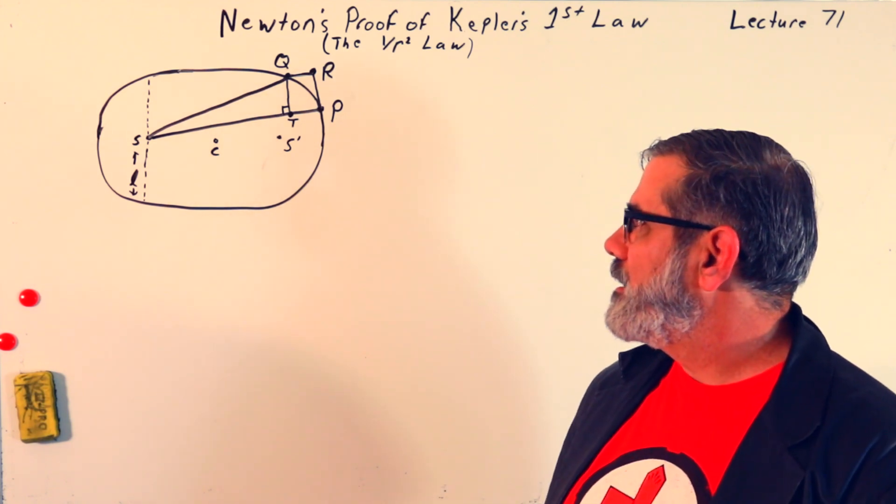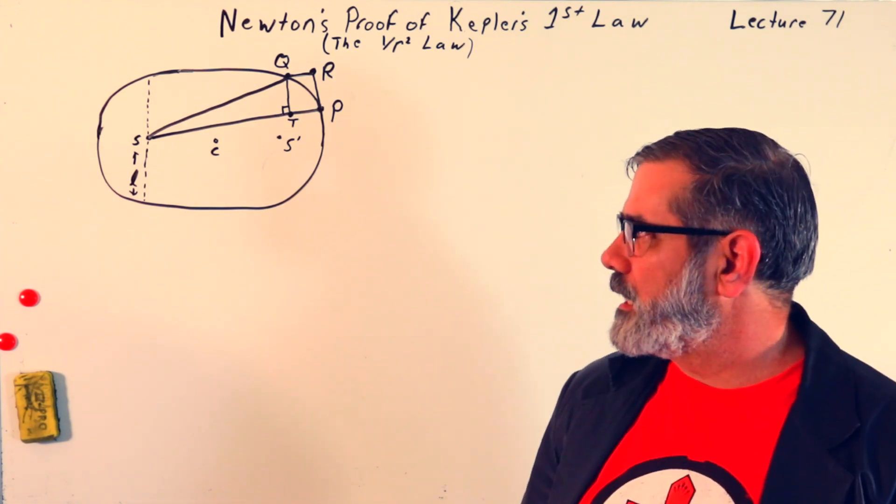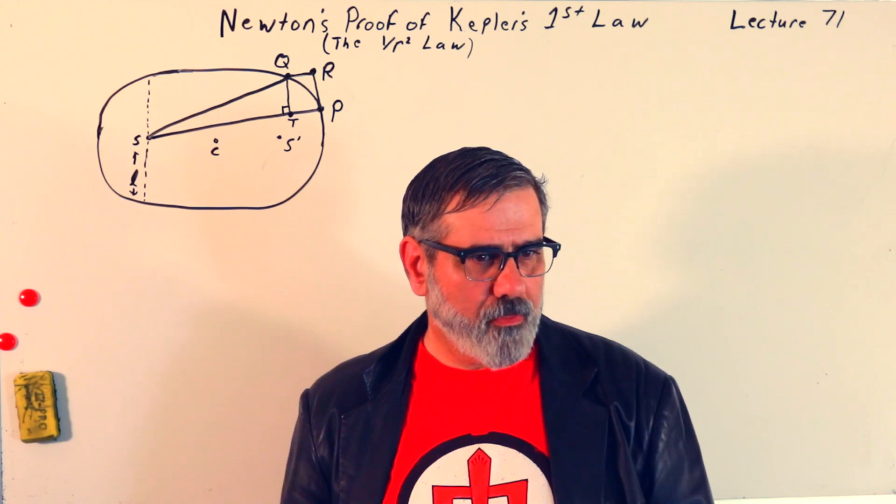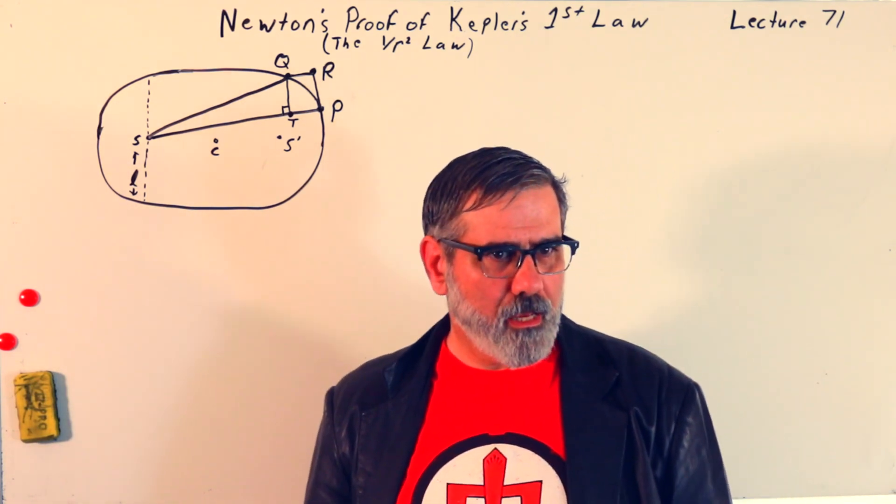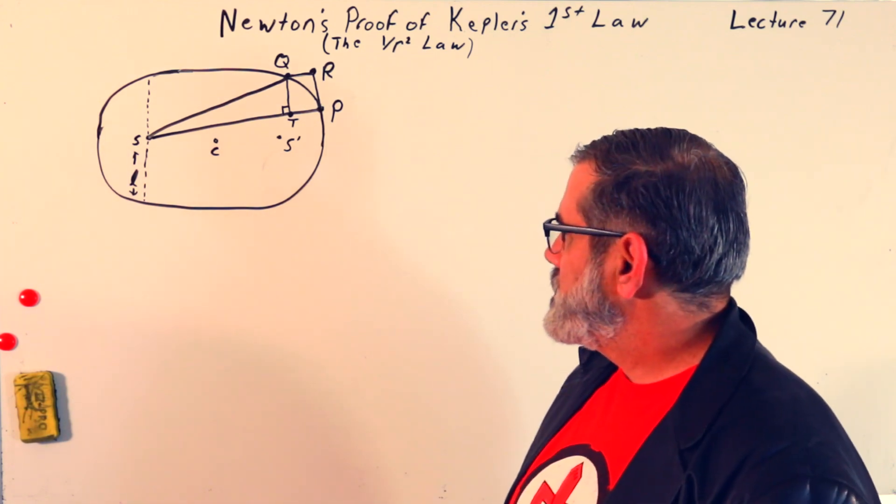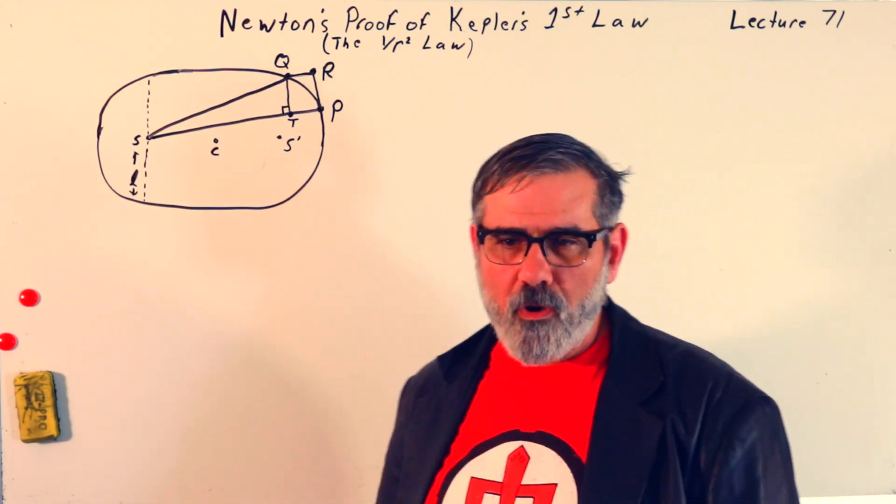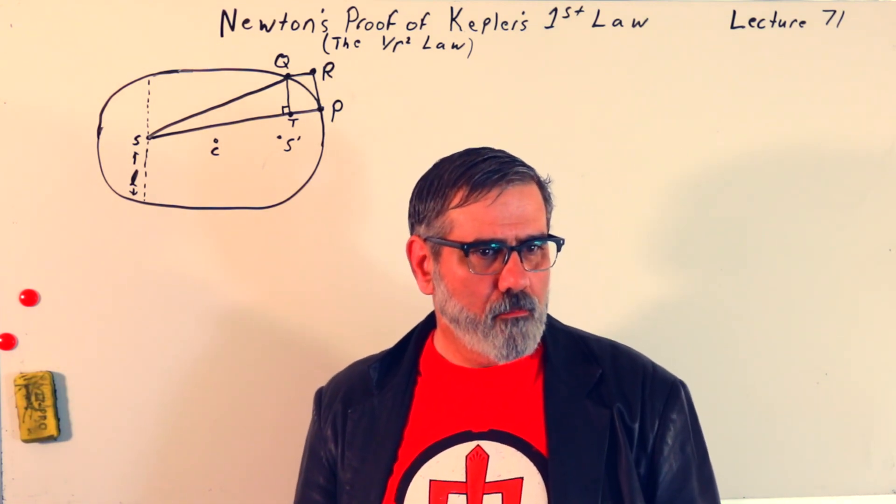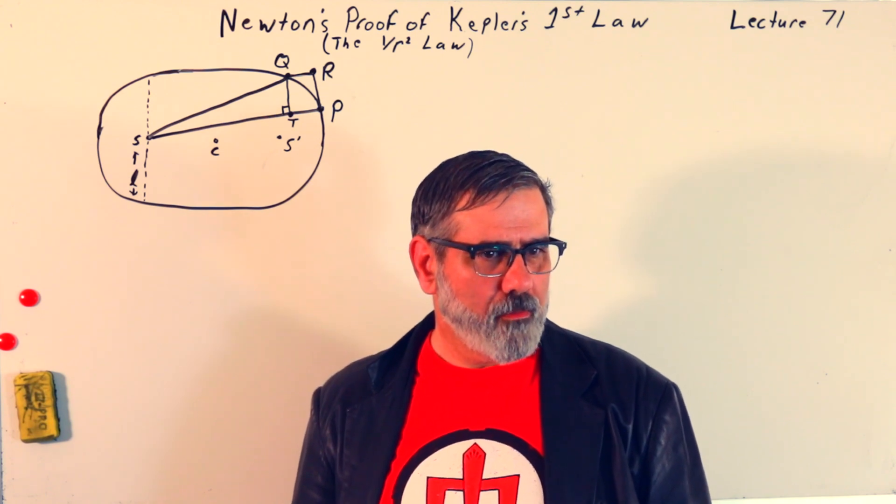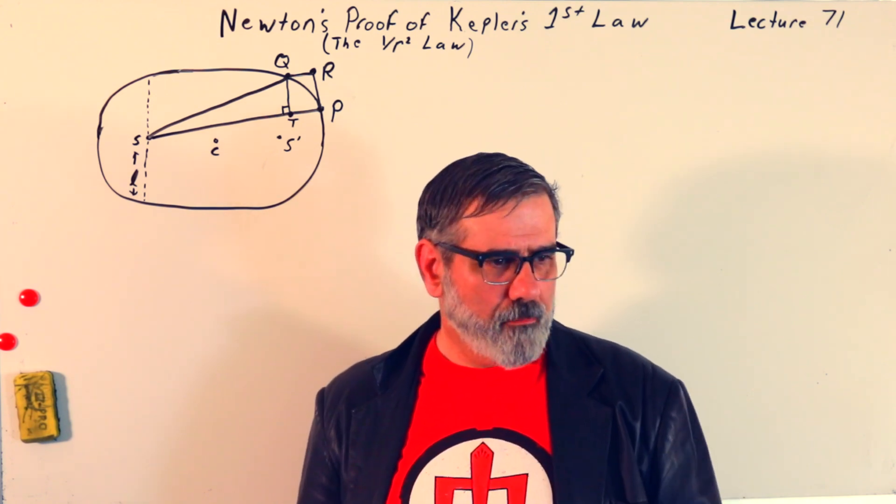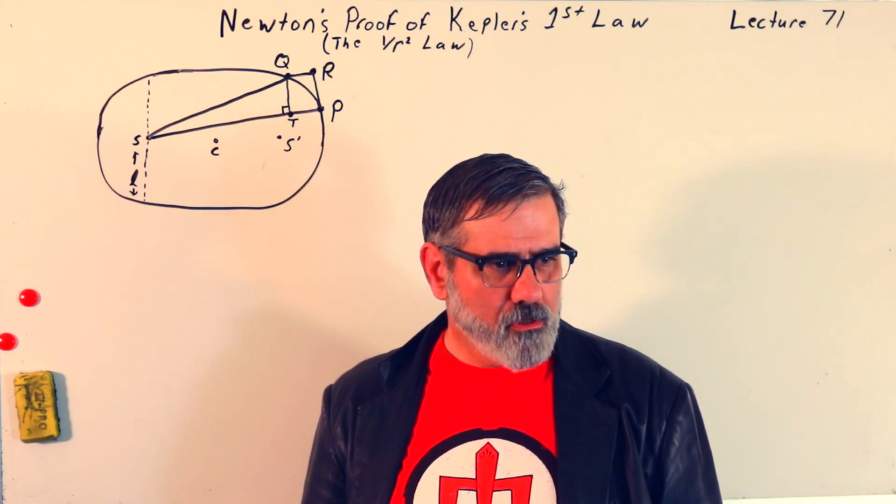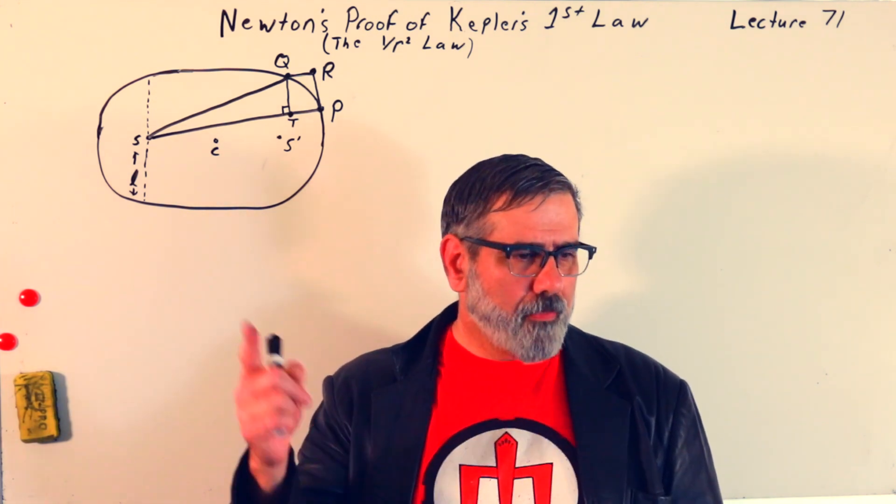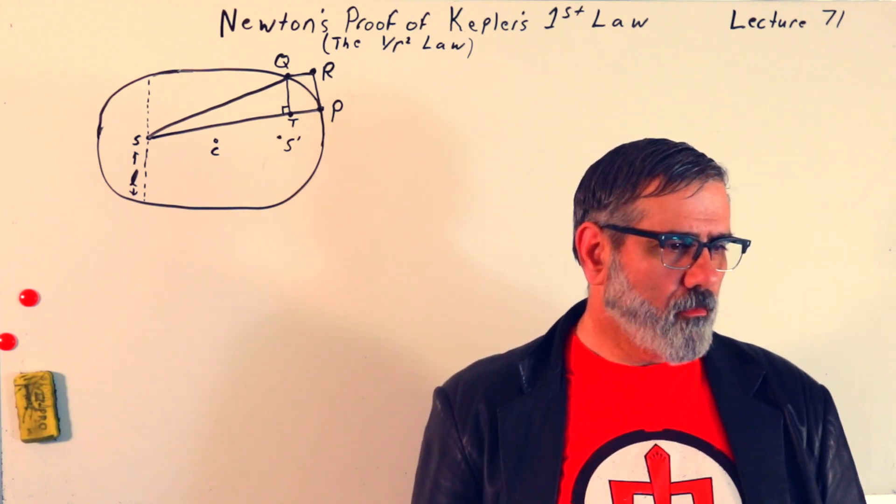So to start with, we'll start with theorem 3. We've already talked about theorem 1 and theorem 2 in the past couple of lectures. I think lectures 69 and 70. So this is his theorem 3, and this is the theorem that he uses to solve Kepler's problem. That orbits are described by ellipses.